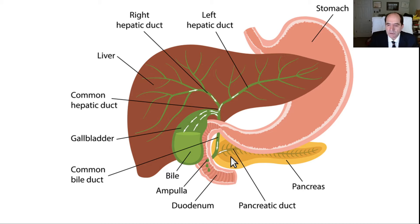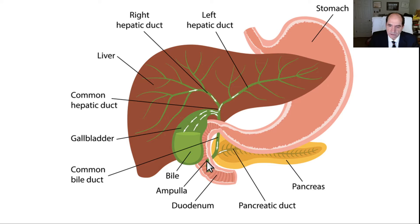The pancreatic duct is right here — the pancreas makes lots of enzymes for digestion of food, and it connects to the common bile duct. This junction is called the ampulla of Vater, and the sphincter of Oddi is where it opens up and the bile drips into the duodenum.